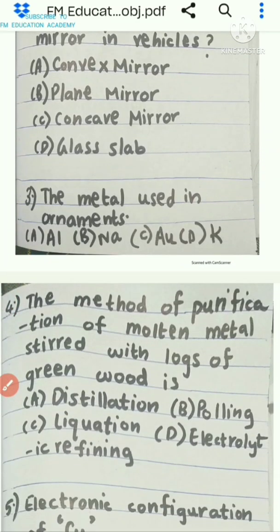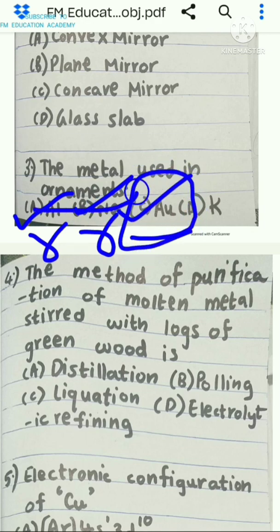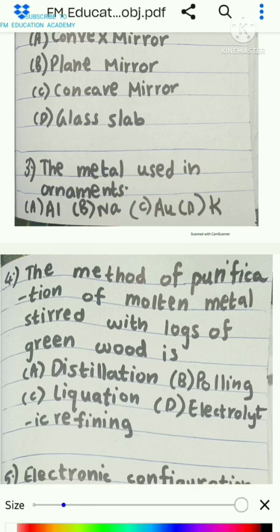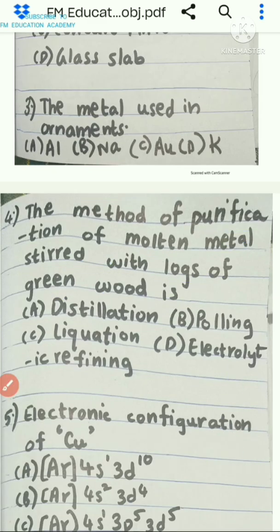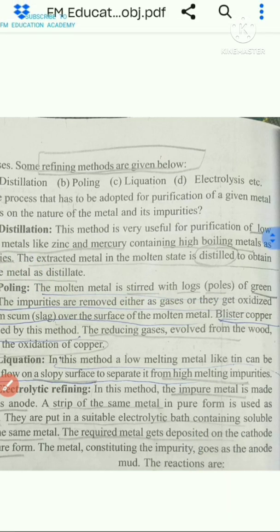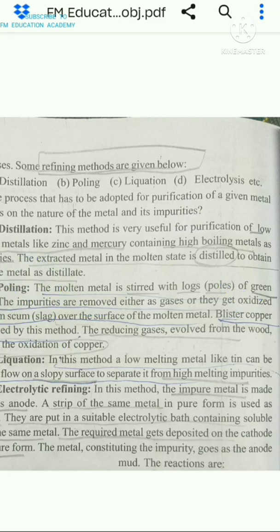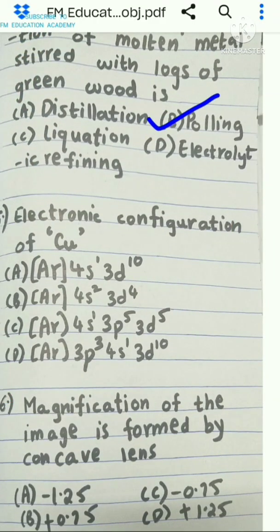Third question: metals used in ornaments. Aluminium (Al) cannot be used in ornaments. Sodium (Na) cannot be used in ornaments. Gold — yes, the symbol is Au — can be used in making ornaments, that is jewelry. Fourth question: the method of purification of molten metal stirred with logs of green wood is Poling, from the chapter Principles of Metallurgy. The impurities are removed either as gases as they get oxidized. The answer is option B, Poling — note it should be spelled with a single L.